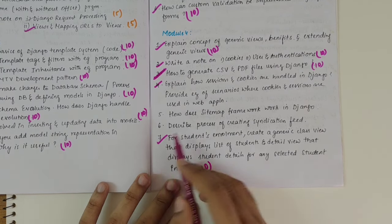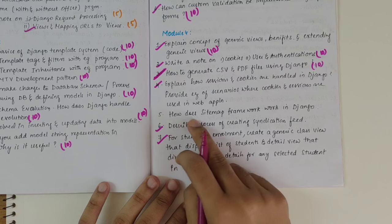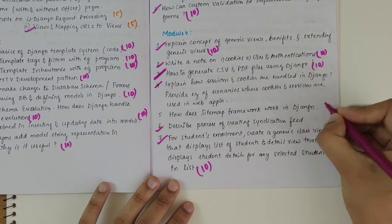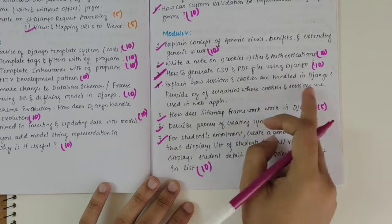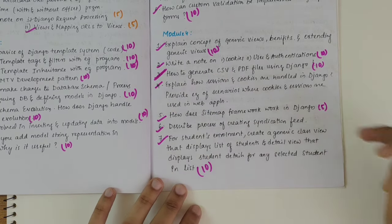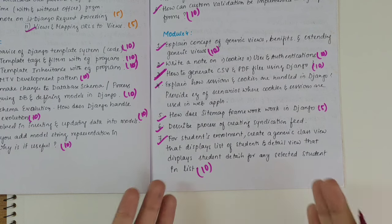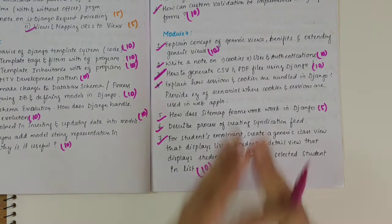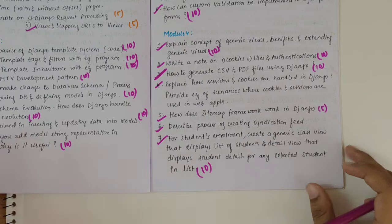Then how do we process of creating syndication feed? Yes, this is important. How does sitemap framework work? This is a five mark question. Then we have example of scenarios where cookies and sessions are used, the same question only. So I would say that in fourth module cover all the important questions. There are only seven questions here. Make sure that you cover all these. You'll be good to go with fourth module.